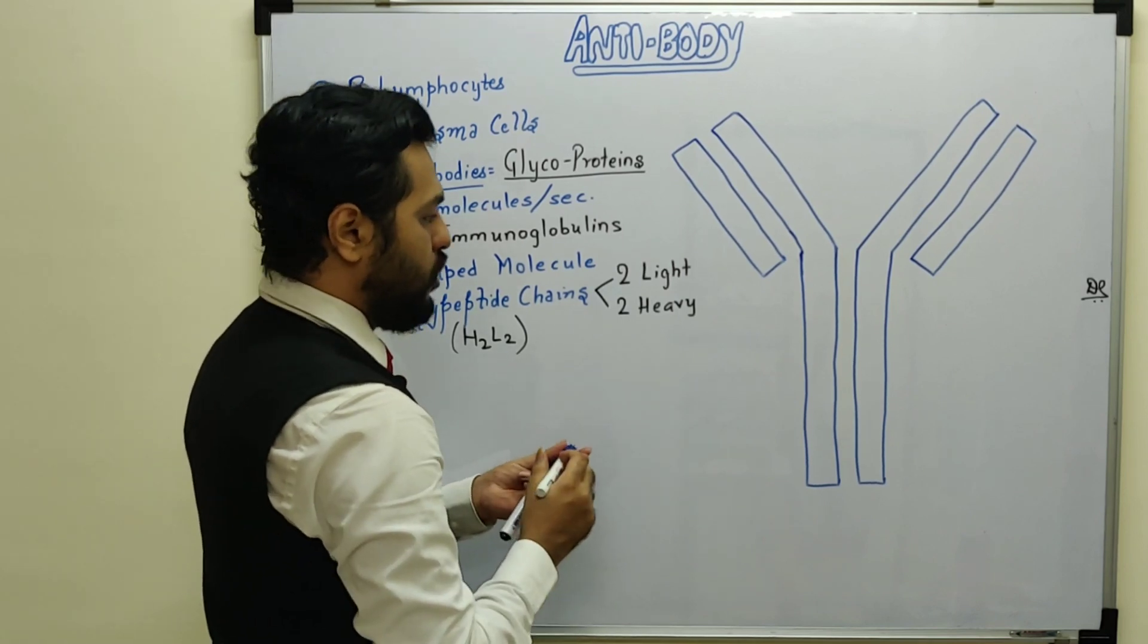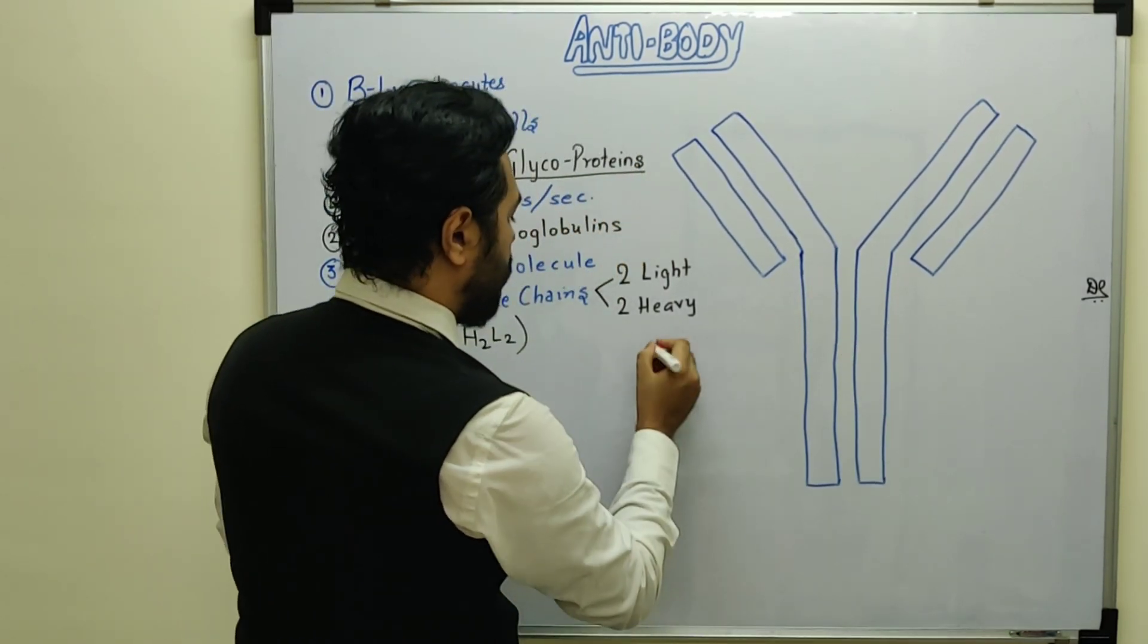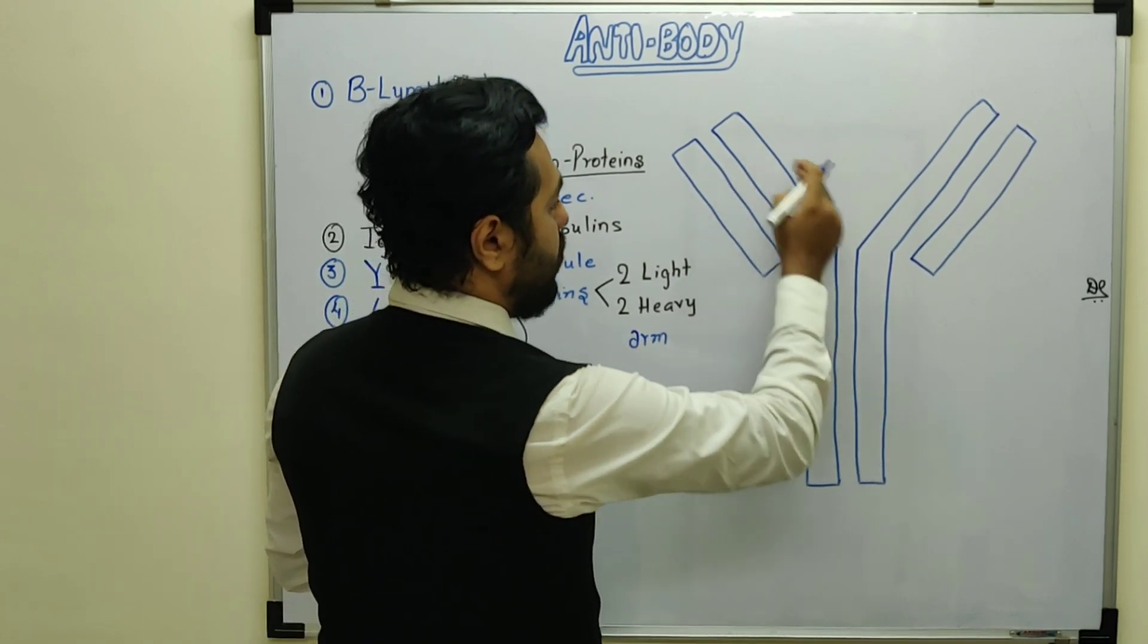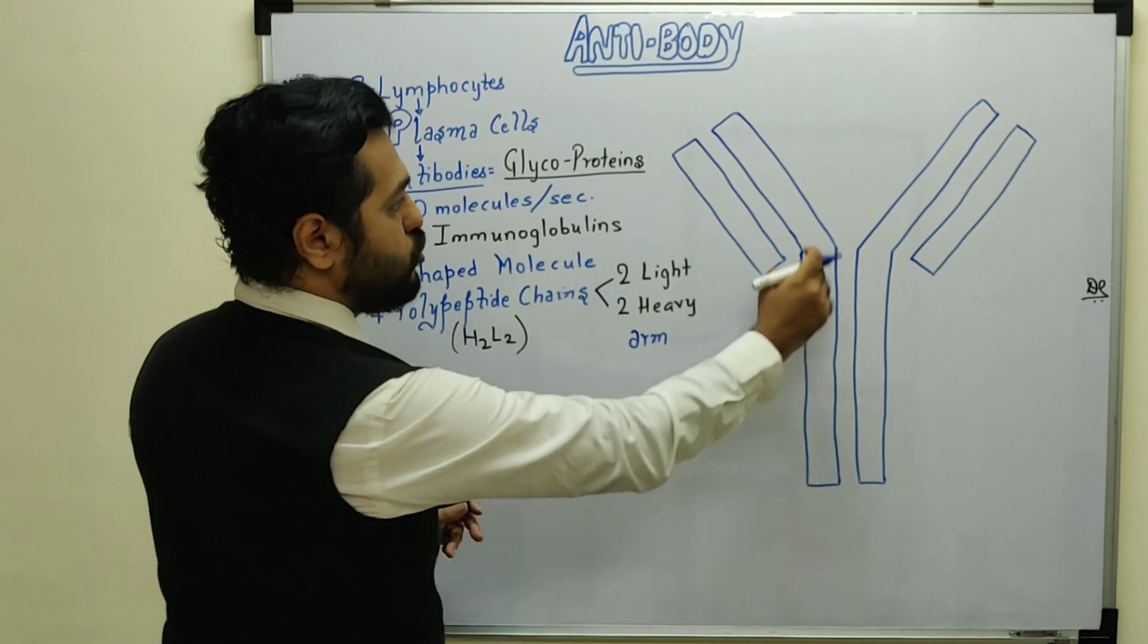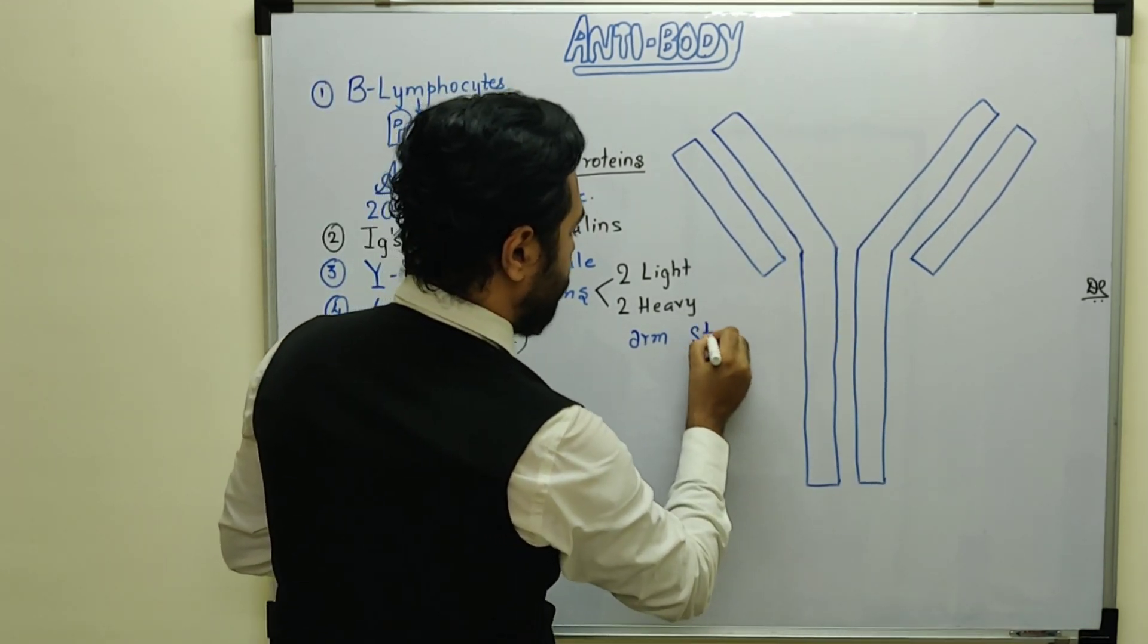The heavy chain has different parts. The upper part is the arm and the lower part is the stem. The heavy chain consists of arm and stem.